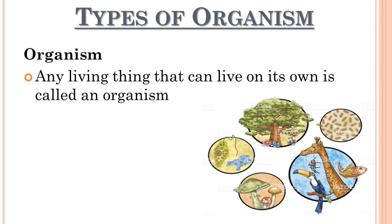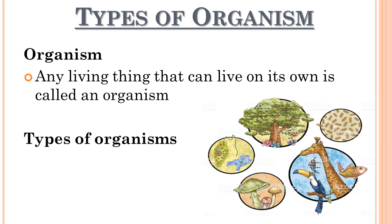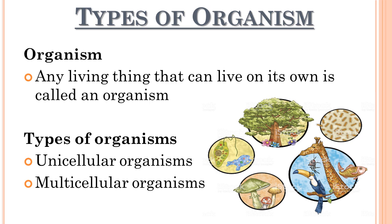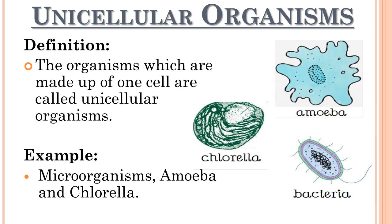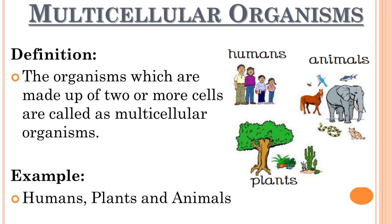Any living thing that can live on its own is called an organism. On the basis of the number of cells, organisms can be classified as unicellular or multicellular. Unicellular organisms are made up of one cell — only one cell makes up the entire body and controls it. Examples include microorganisms, some simple plants and animals, including the single-celled animal amoeba and single-celled plant chlorella. Although amoeba doesn't look like an animal, it has more functions in common with animals than plants. Multicellular organisms are made up of two or more cells, and examples include humans, plants and animals.